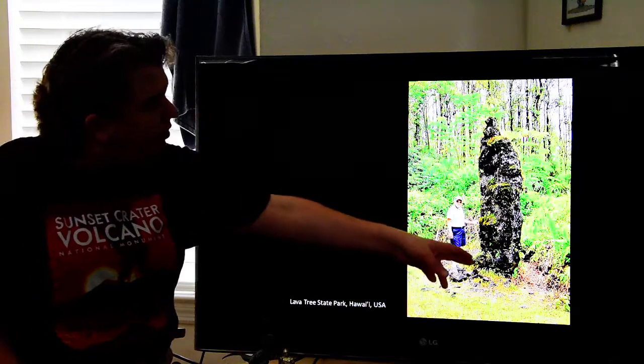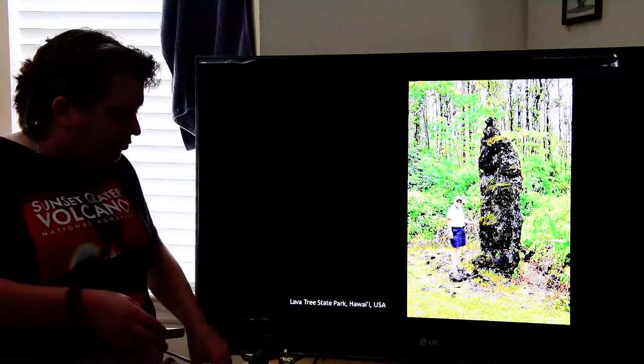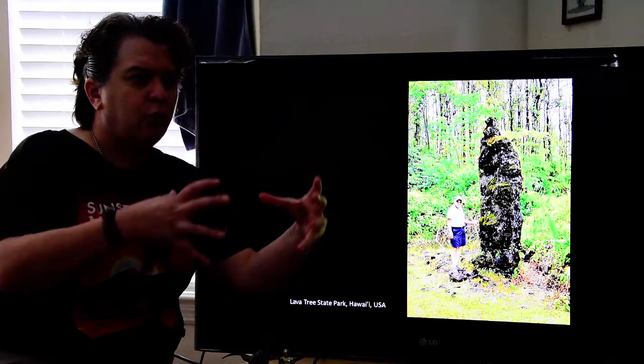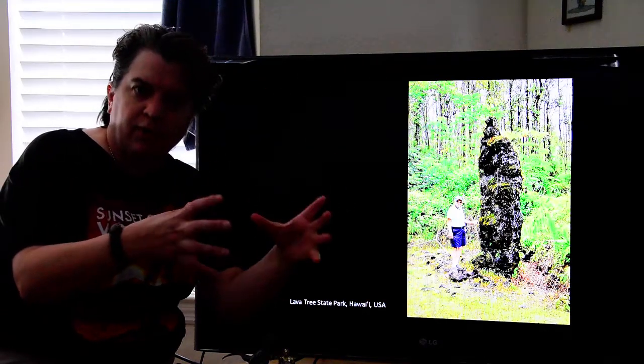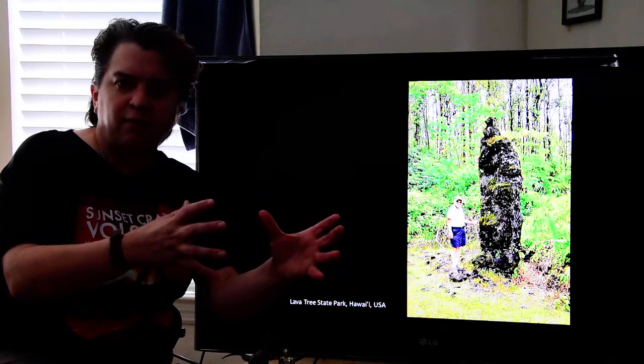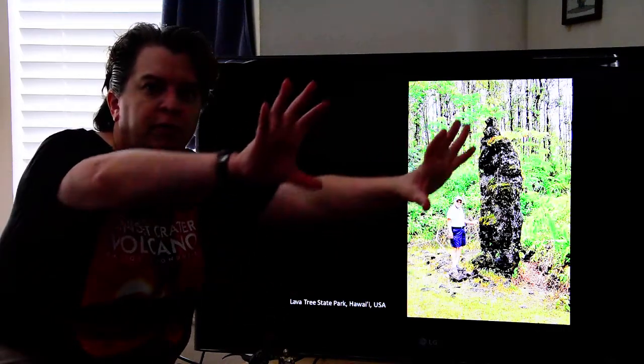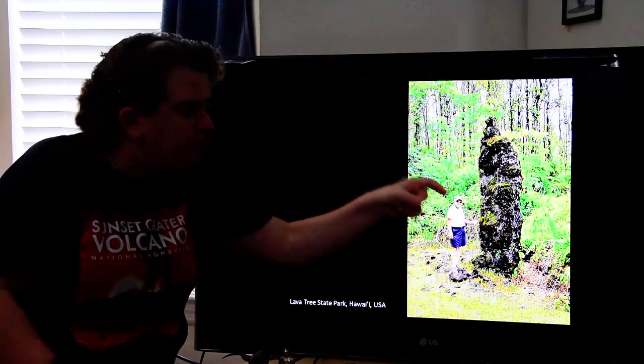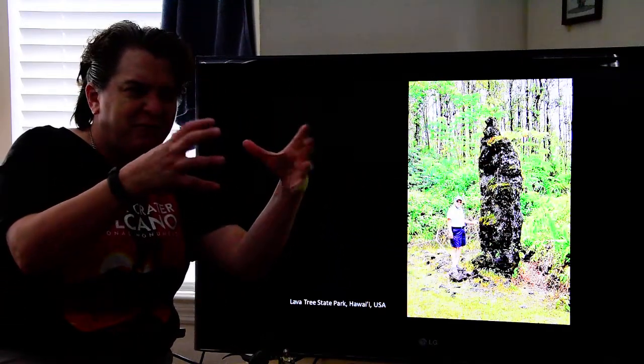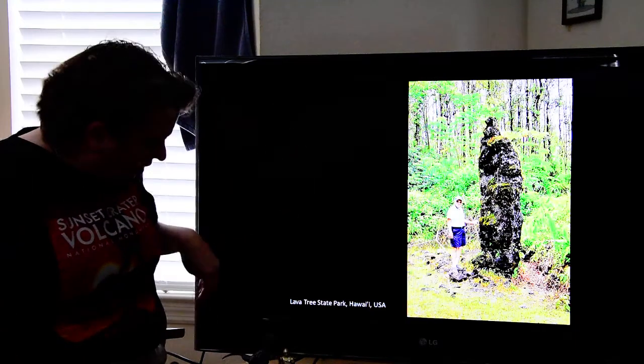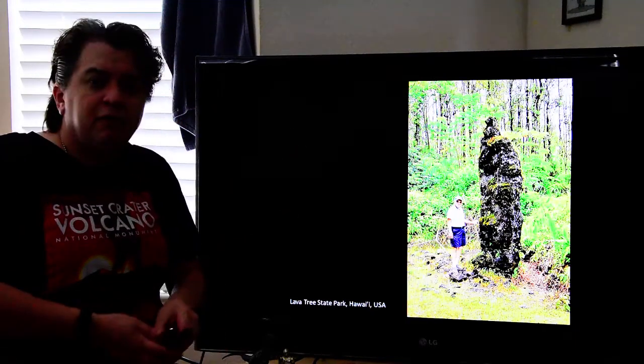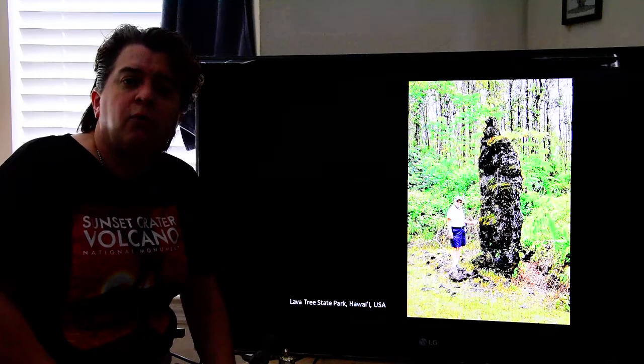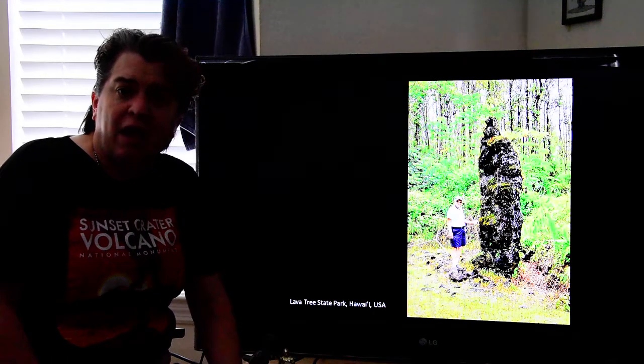Now, lava trees, this is a lava tree right there. The lava tree gets created as lava flows around the tree, cools right against the tree because the tree is very cold compared to the lava flow. And the rest of the lava flow kind of flows away and leaves this kind of tree enclosed in lava behind it. And so these are just some of those neat things you might see in places where basaltic lava flows have occurred.